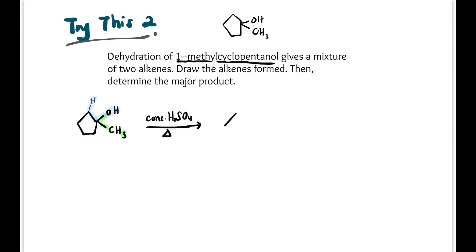The options are: if it takes the blue route, with H on that side, the product will be like this - CH3 with a double bond. Meanwhile if it takes the green route, it will be like this - CH2 outside with the double bond. Then of course there must be H2O as the side product. The question asks to determine the major product.